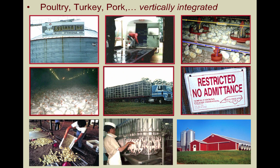Poultry, turkey, pork, and most other industries have transformed from single farmers to vertically integrated companies, which means they are businesses that expand into different areas along the same production path. These vertically integrated companies are united through a common owner. Usually each member of the supply or commodity chain produces a different product or market-specific service, and ultimately the products combine to satisfy a common need.